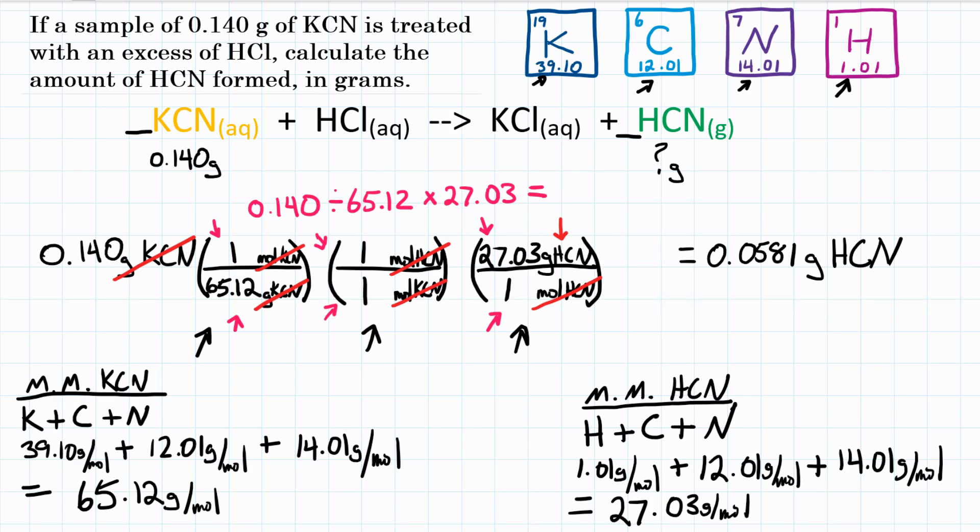Final answer, if all 0.140 grams of KCN reacts in the following reaction, we will get 0.0581 grams of HCN produced.